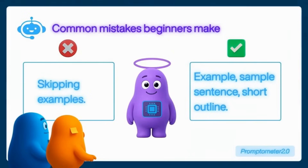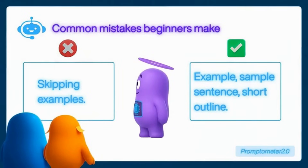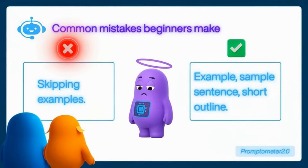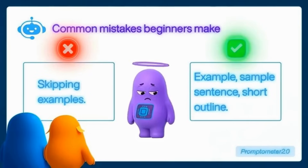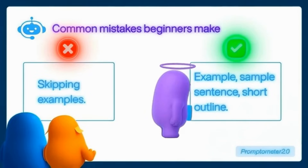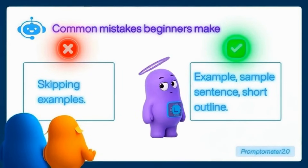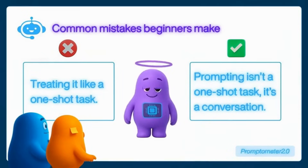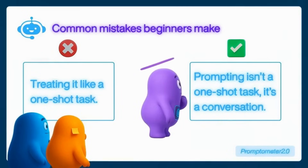Mistake number three: skipping examples. The AI doesn't magically know your taste. If you never show it what great looks like, it'll just invent something random. So give it a quick example, a sample sentence, or even a short outline. Mistake number four: treating it like a one-shot task. Prompting isn't a one-shot task — it's a conversation.